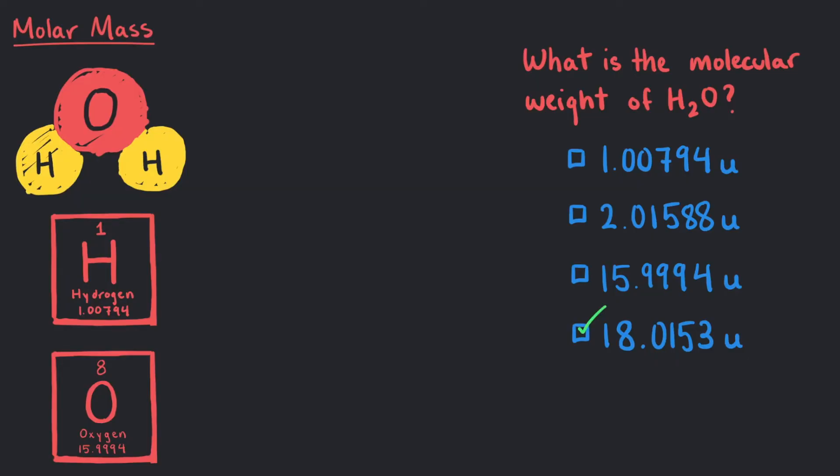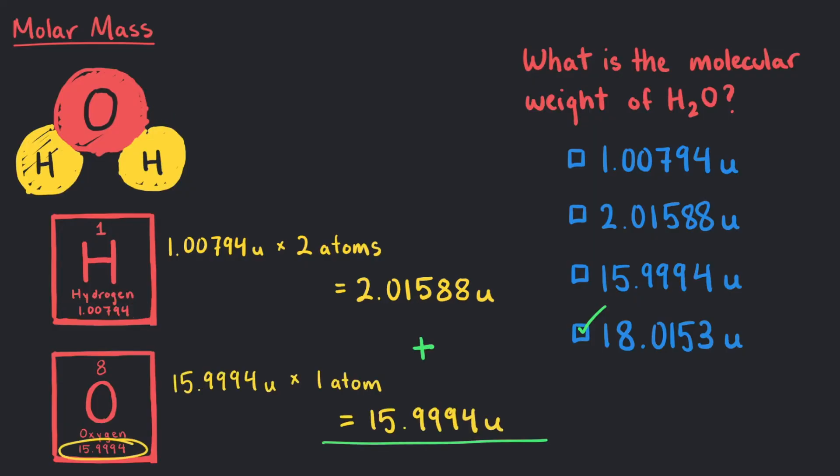That's right! Each hydrogen atom has an atomic mass of 1.00794U, and there are two of them, so 1.00794U times 2 is 2.01588U. We can add this to our one oxygen atom giving us 18.0153U as our molecular weight. Let's round 18.0153U to 18U for the time being.